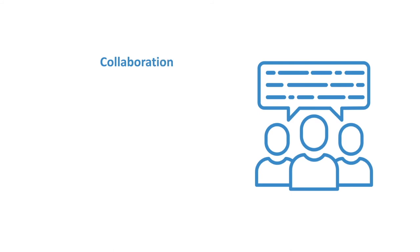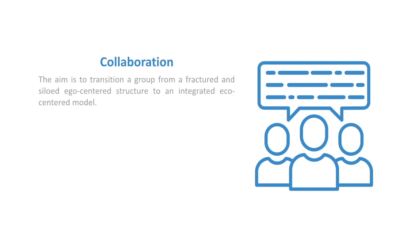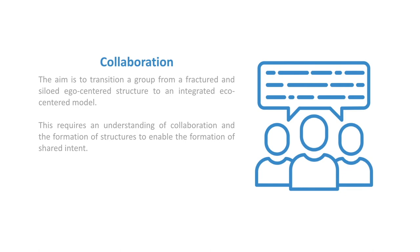We're going to have to set up some kind of structures for collaboration. The aim is to transition a group from a fractured and siloed, ego-centered structure to an integrated, eco-centered model — trying to create ecosystems. This requires an understanding of collaboration and the formation of structures to enable shared intent amongst the group. Key considerations include having everyone represented at the table and dealing with power dynamics.